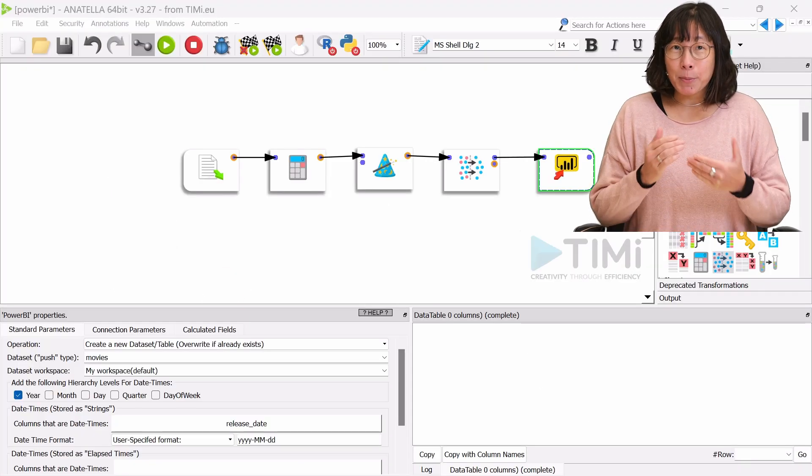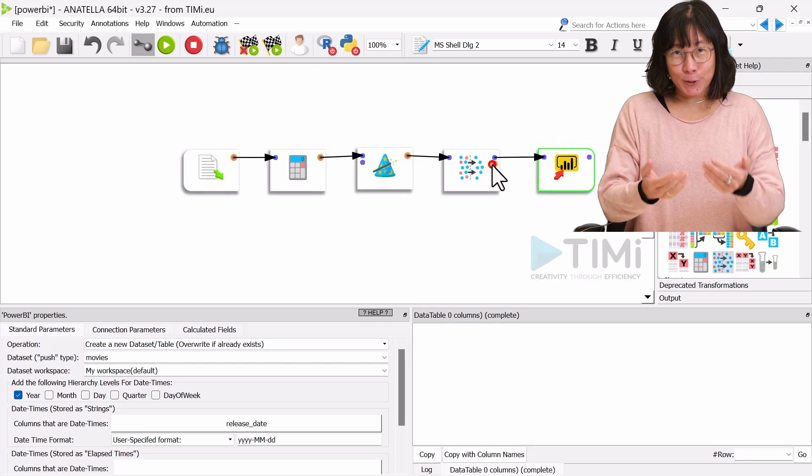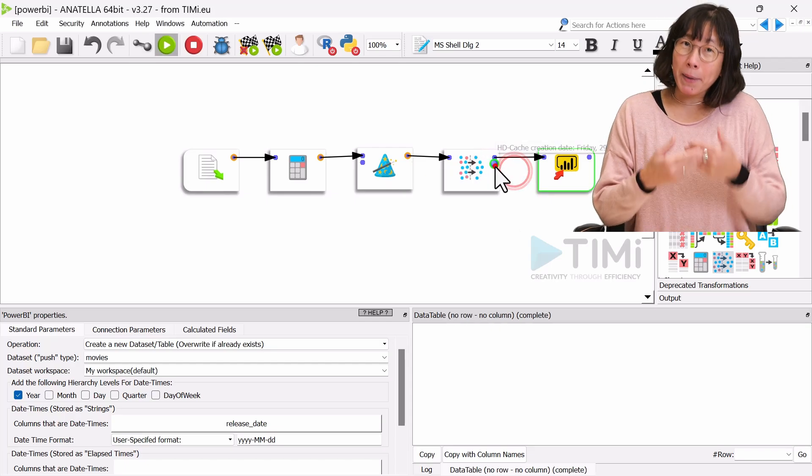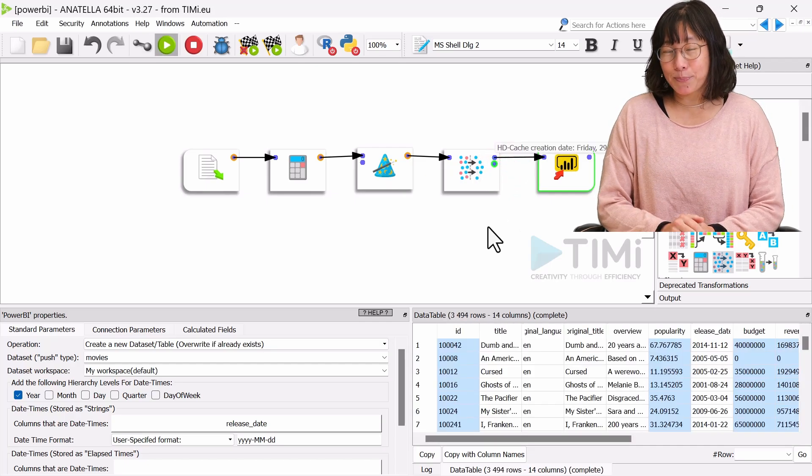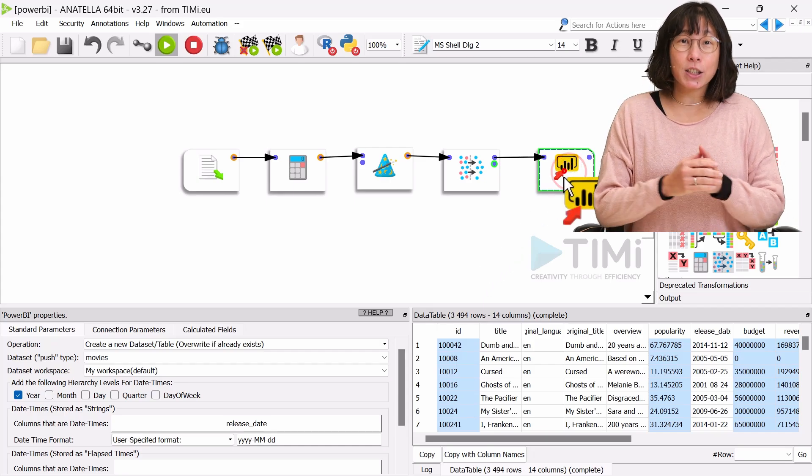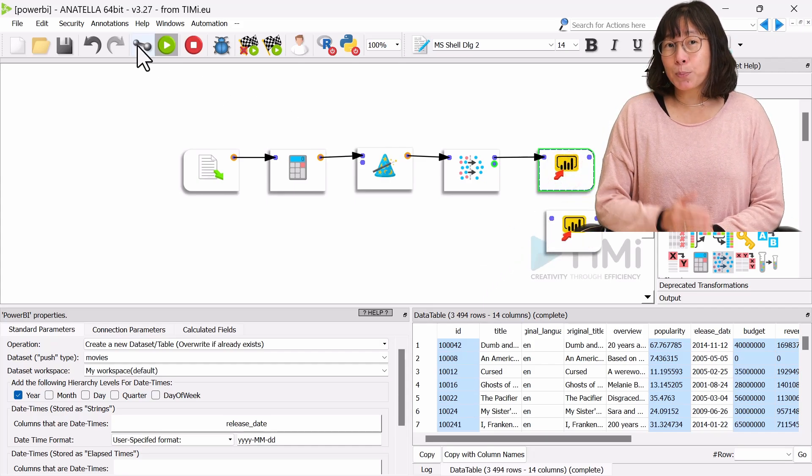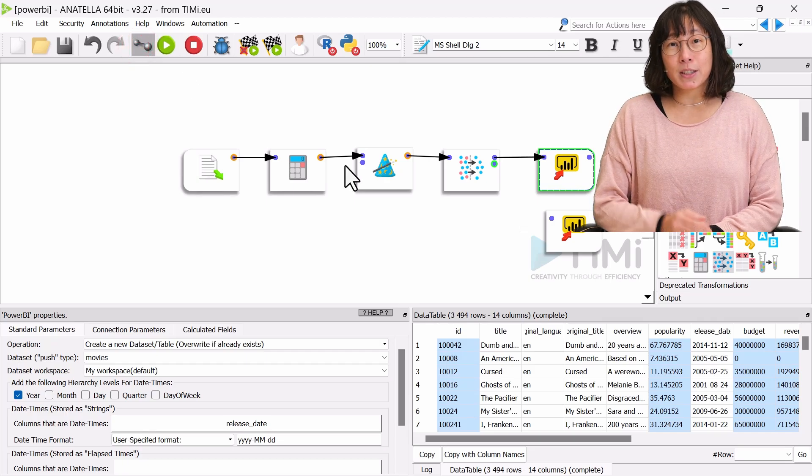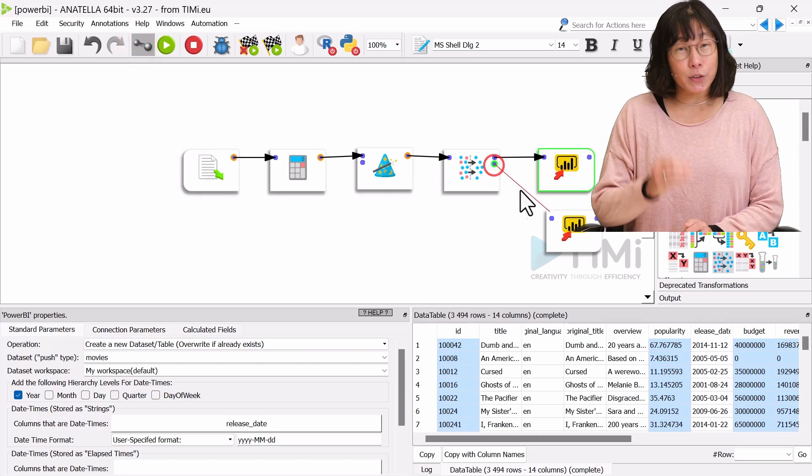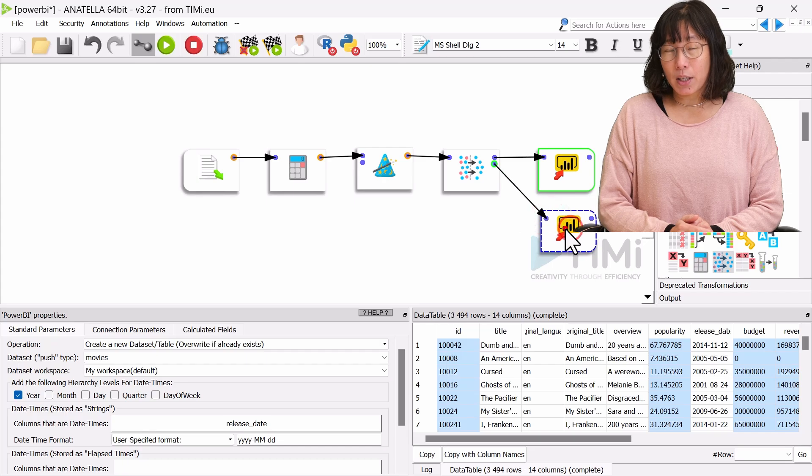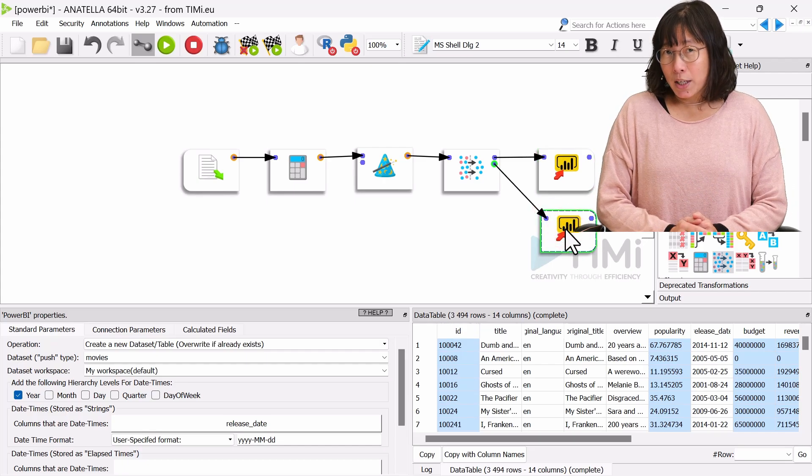Now, let's imagine that you have already uploaded some rows and you want to append more rows to your dataset. Copy the Power BI box and connect it to the second output pin of the filter box that contains the movies released after January 2000. This is 3,494 rows.